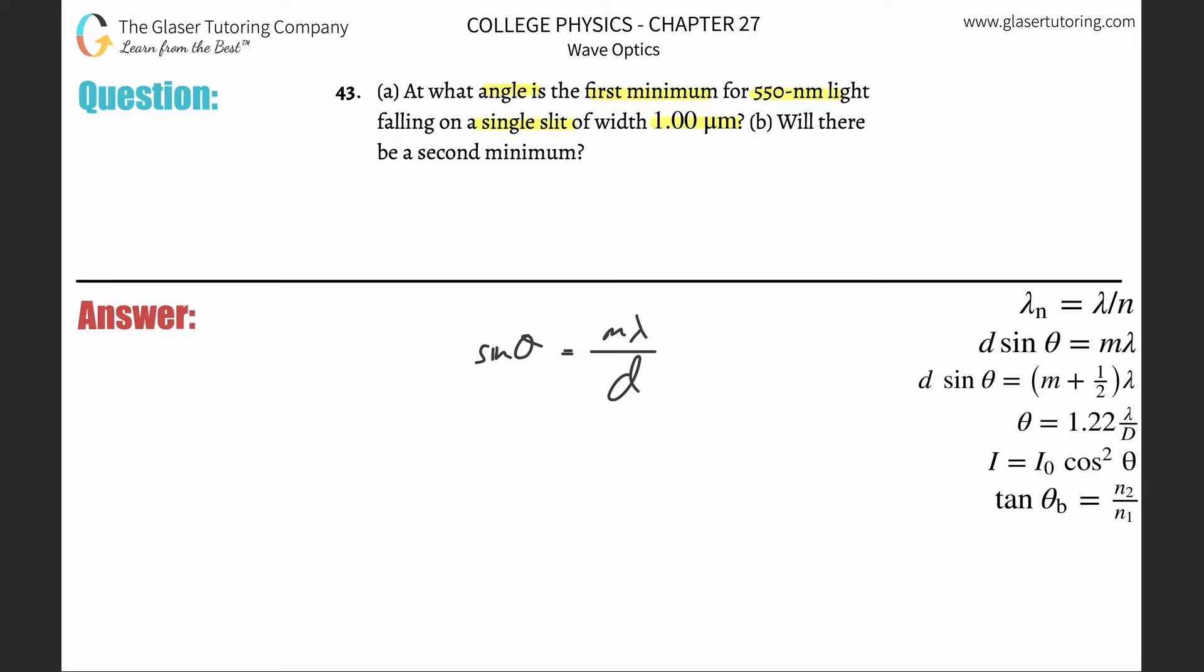And then if I want to find theta, all I have to do is take the inverse sine of both sides. When I do that to the left, it just cancels the sine. And there we go. So now all I have to do is basically plug it in. So this is M, that's one because it says first minimum. The wavelength then is going to be 550 nanometers, so multiply that by 10 to the minus ninth. Then I'll divide that by the distance here, which was one micrometer. Just convert that into meters. And there you go. So let's see what it works out to be.